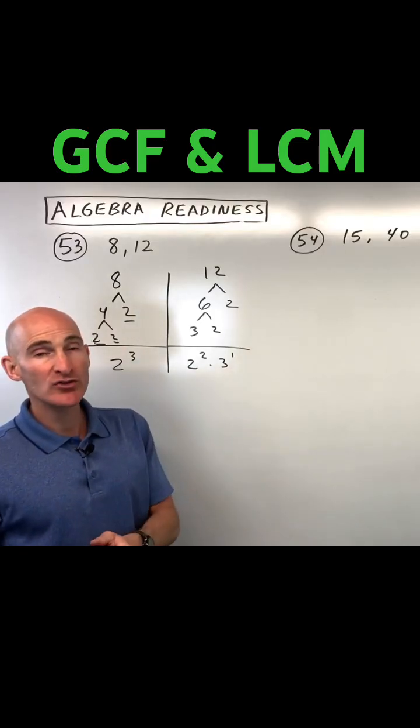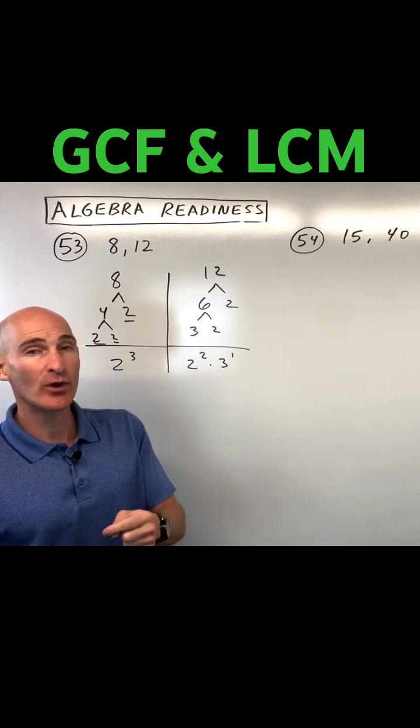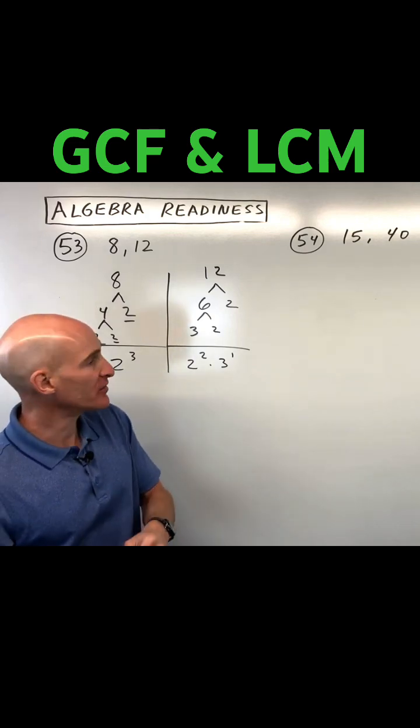So I've just broken the numbers down. Now when you do the greatest common factor, you actually take what occurs not the greatest but the least.